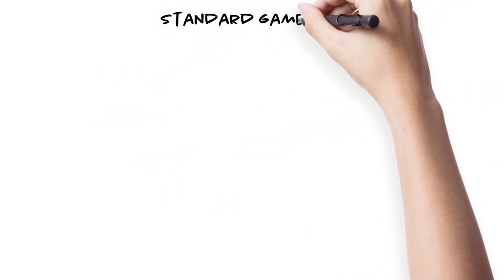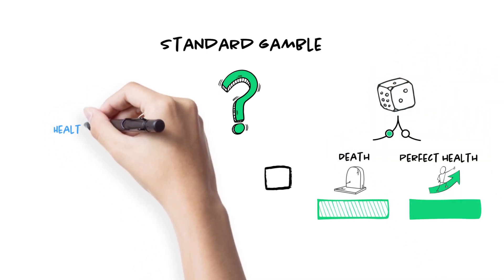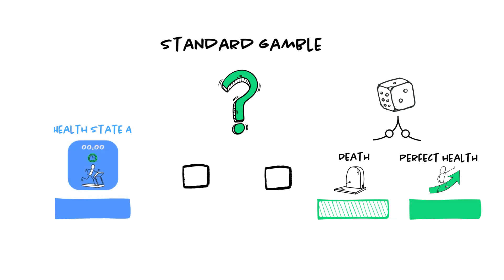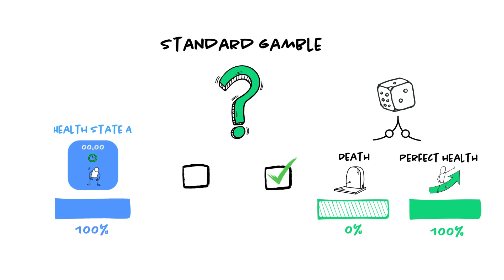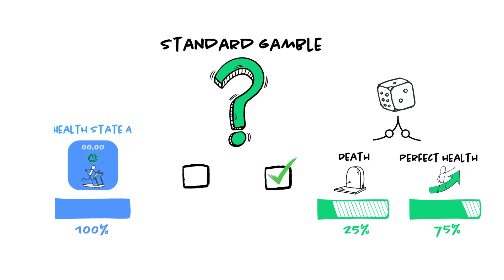The standard gamble method usually involves asking a person to choose between an uncertain option — where the person either lives in full health or dies immediately — and a certain option where the person remains in an impaired health state A. If we start with a choice between 100% chance of living in full health and 100% chance of living in the impaired health state for the rest of their life, of course all will prefer the first alternative. But what if we replace the 100% chance by a 90% chance of living in full health and a 10% chance of immediate death? What if we further reduce the chance of living in full health to 80%, then 70%? In other words, we modify the probability of immediate death until the point of indifference where the respondent values the uncertain and certain options equally.